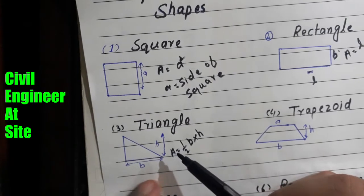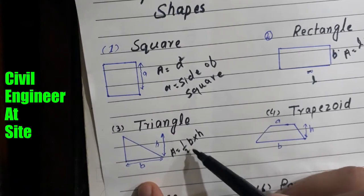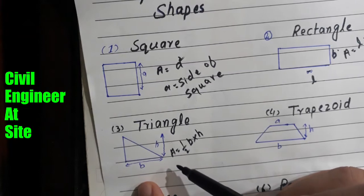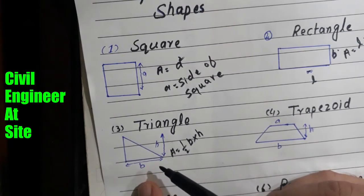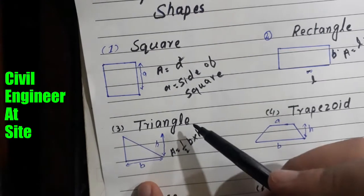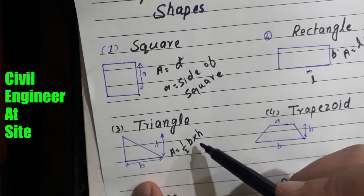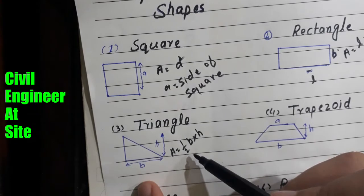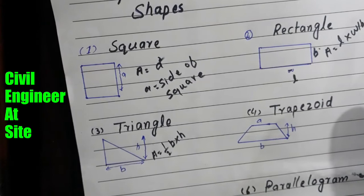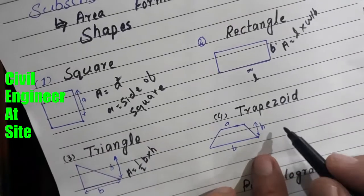The third shape is the triangle. The formula for the triangle is A = ½ × b × h, where b is the base and h is the height of the triangle. When we have the height and base values, we can calculate the area of the triangle by putting the value of base and height and dividing by two.